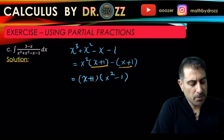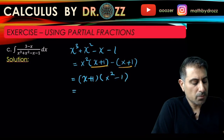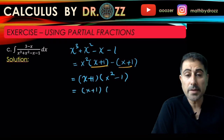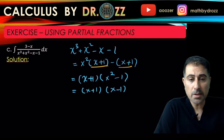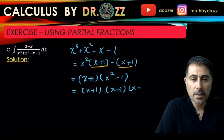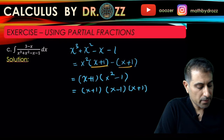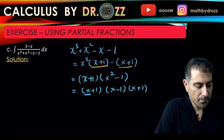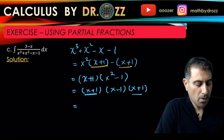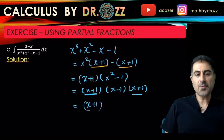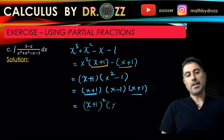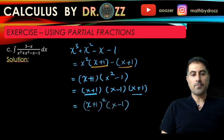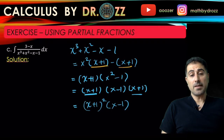I can factor x squared minus one as (x minus one)(x plus one) — that's the difference of squares from algebra. So we can combine those factors. This is an easy way to factor the cubic in the bottom.